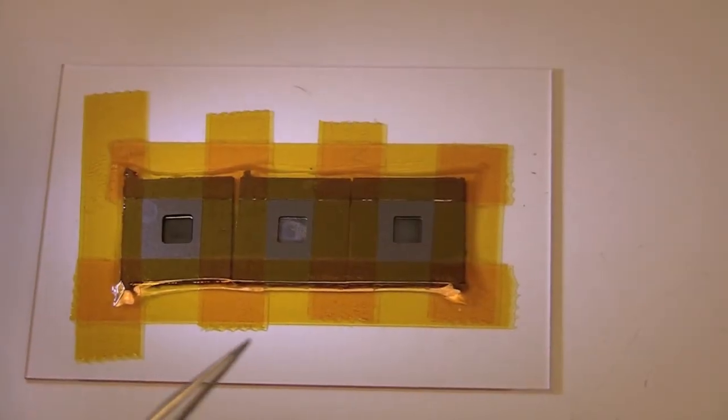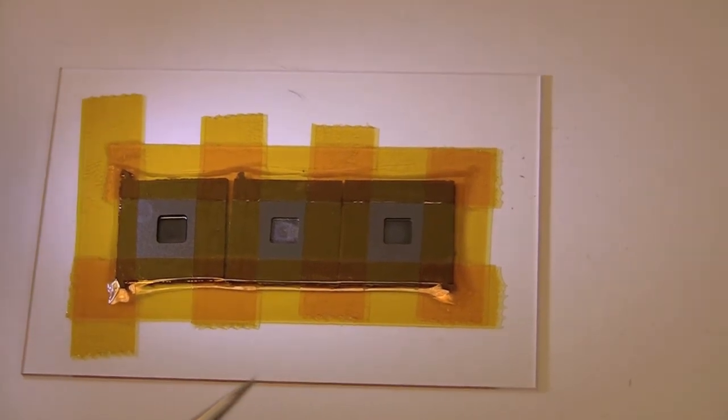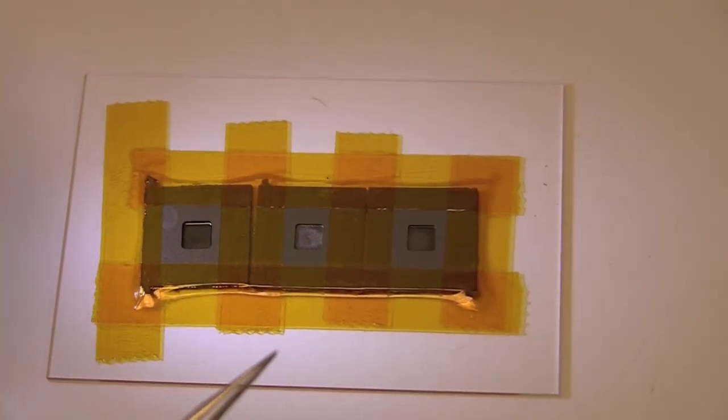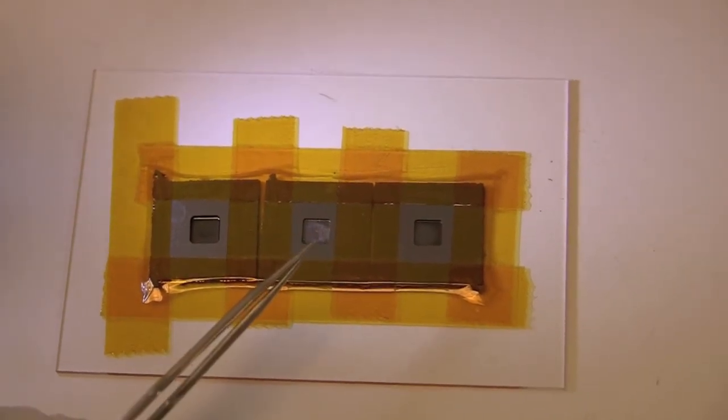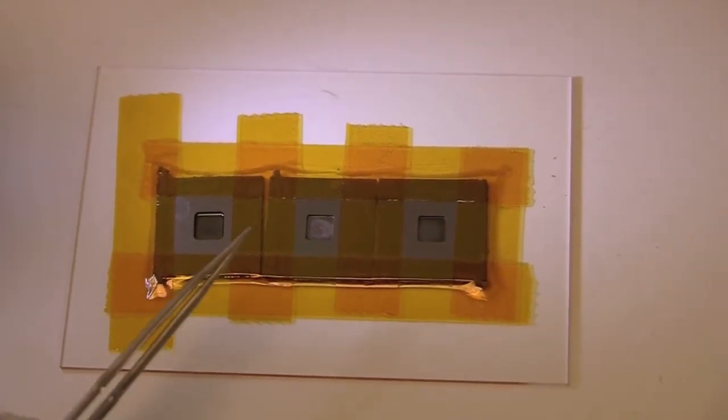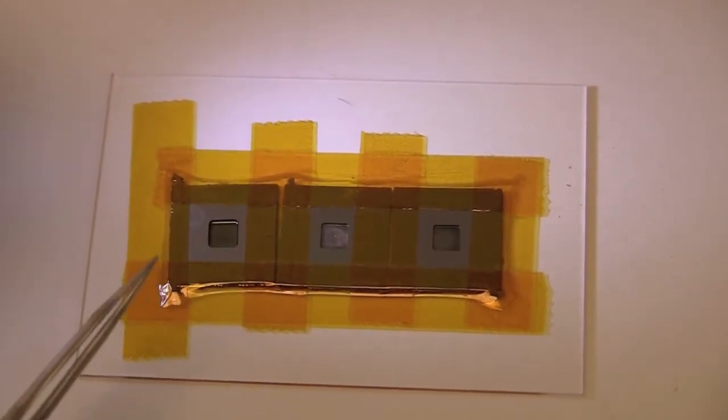Now earlier, I showed you how to prepare a sample for our xenon difluoride machine. This is a sample that's been run through the machine, and I wanted to point out a couple of things about this. As you can see, this middle device here looks a little different from the left and right. That's because it's etched a little more than the other samples.